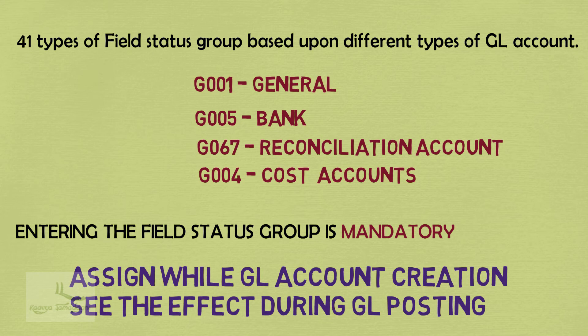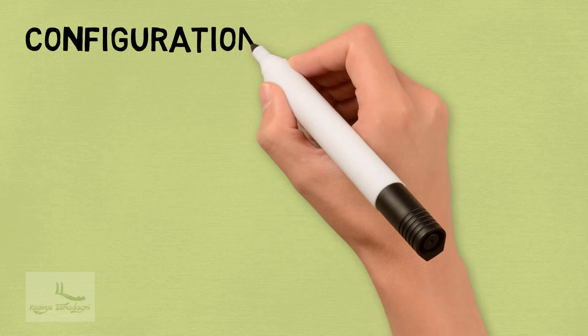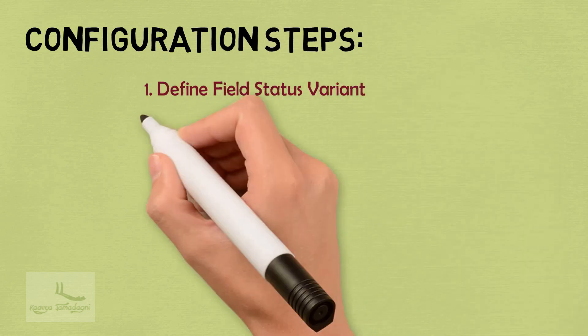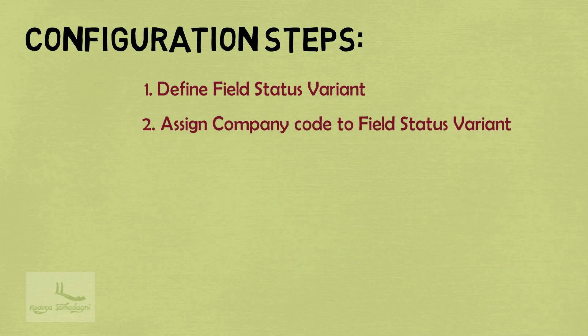One thing you need to remember is we do not create new fields for the variant — we always copy from the standard SAP. The configuration we will do as part of field status group involves two steps: first, defining the field status variant by copying from the standard field status variant, and second, assigning the company code to the field status variant.